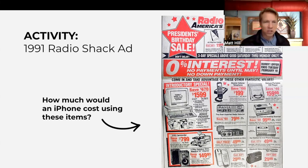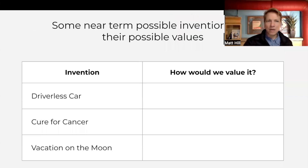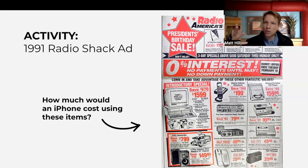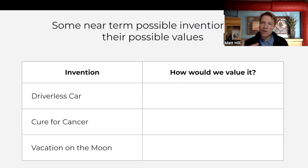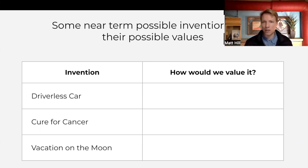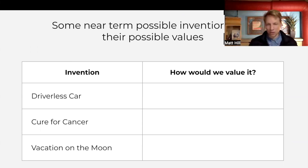This is what your students are going to do in their student activity sheet — come up with a number, and it is a high number. The point of this exercise is to show the difficulty of comparing things over time because of new goods and because of the change in quality. And let's look towards the future — this is to spark discussion. Let's think of some possible inventions that may happen in our lifetime: a driverless car, a cure for cancer, a vacation on the moon. How would we value these things? How much would we pay for them in the present?